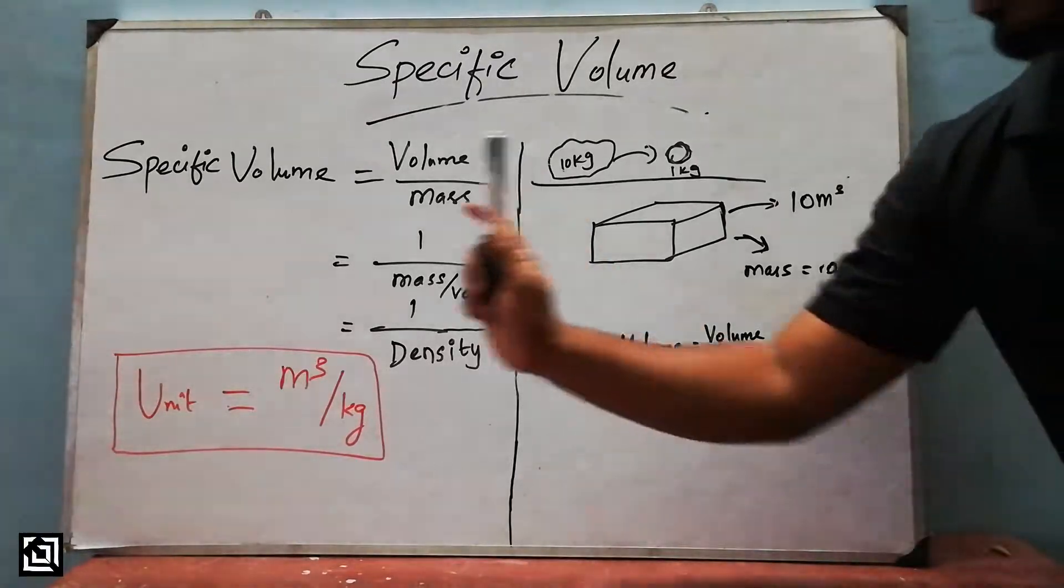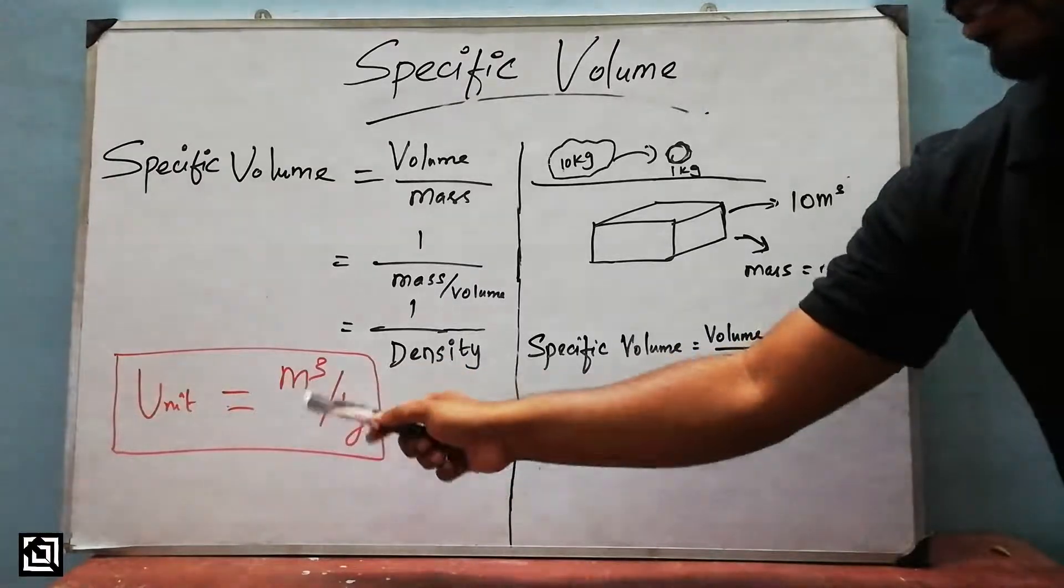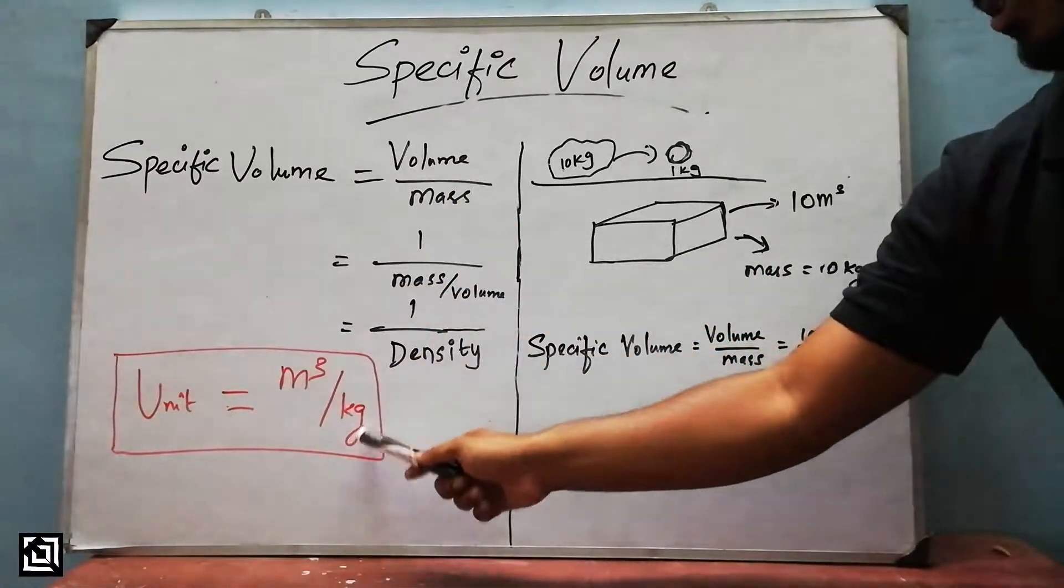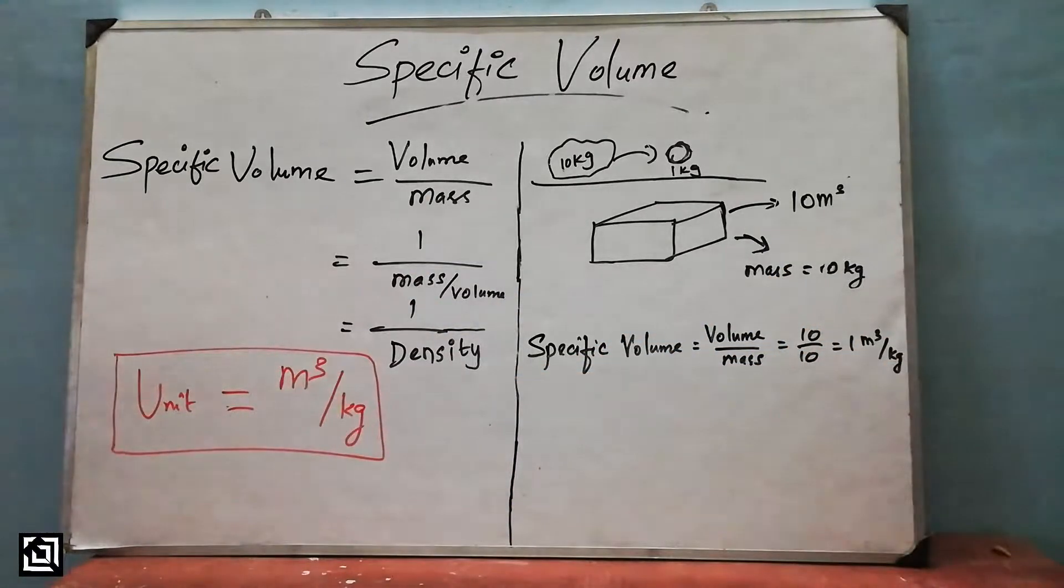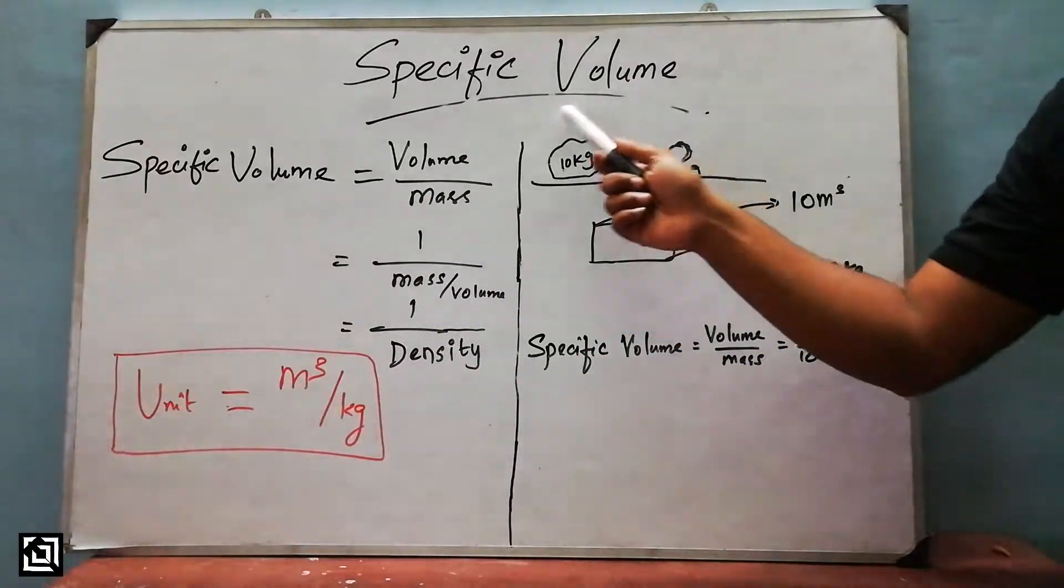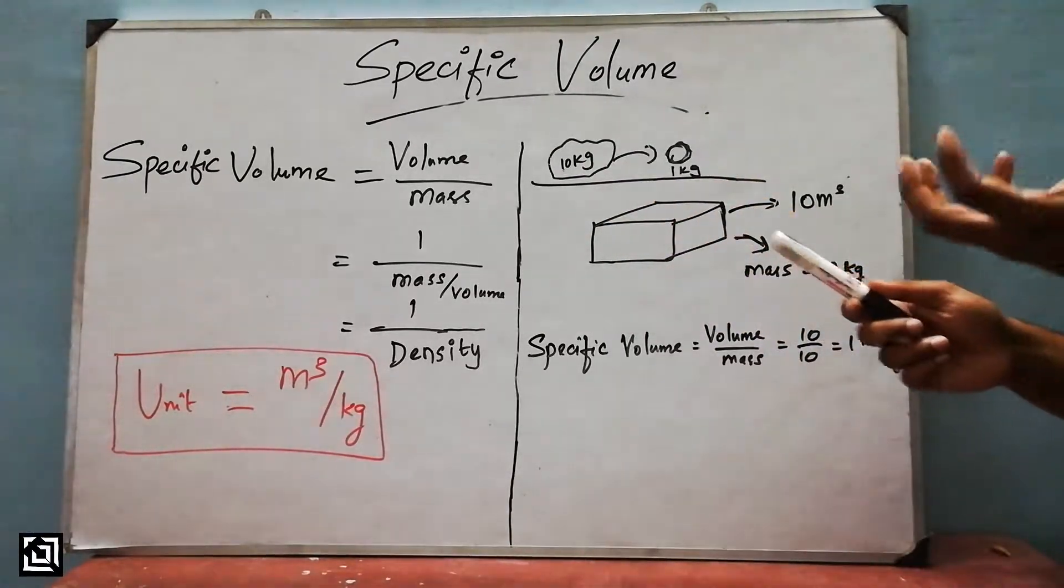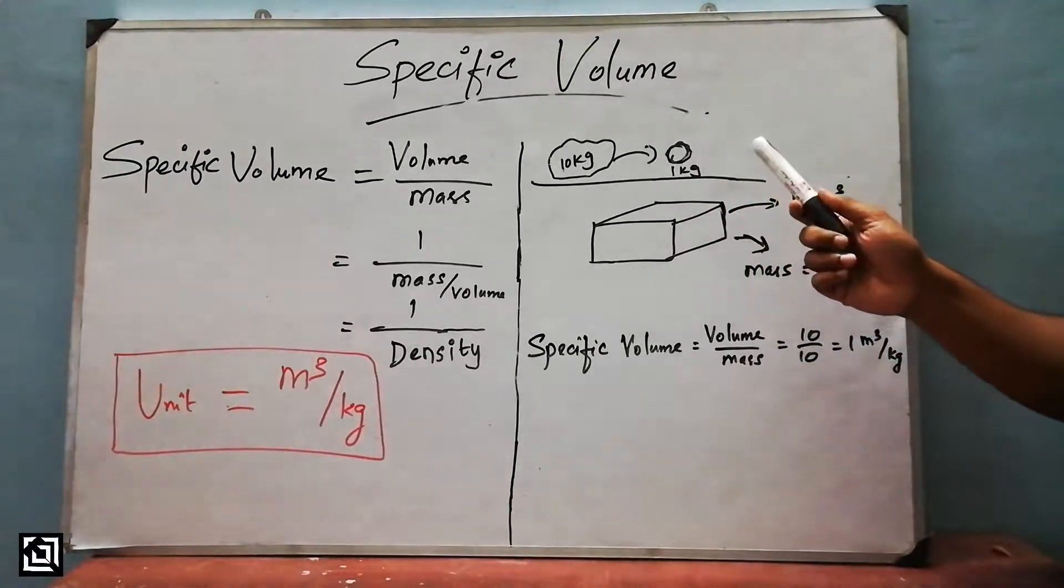Specific volume has units of meter cubed per kg. Volume unit is meter cubed and mass unit is kg, so meter cubed by kg.